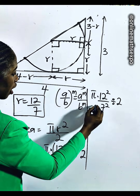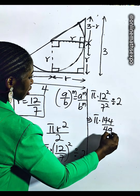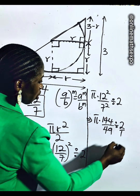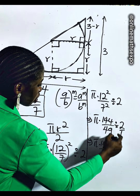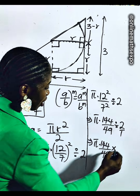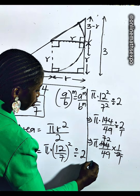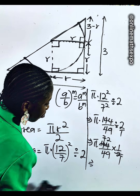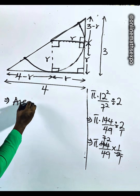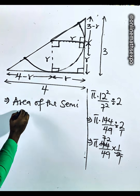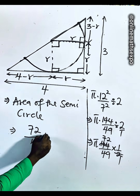Next, 12 squared gives us 144, and 7 squared gives us 49, divided by 2. Since this 2 is over 1, we have pi multiplied by 144 over 49, then multiplied by 1 over 2. The 2 divides into 144 to give 72, and 72 times 1 is 72. So the area of the semicircle is equal to 72 over 49 times pi.